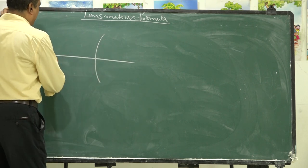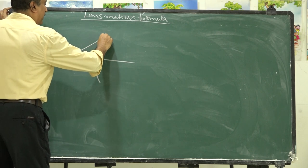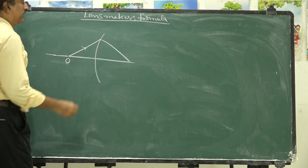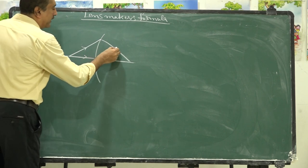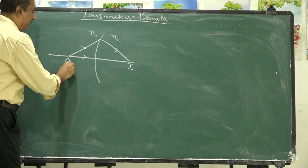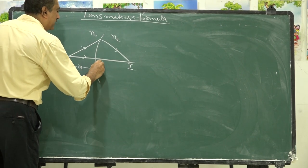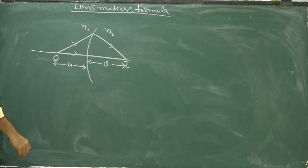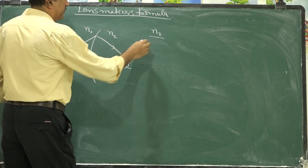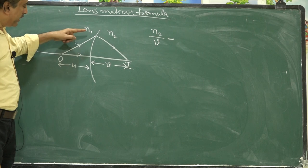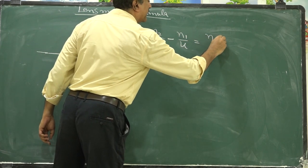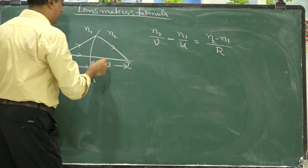Suppose light suffers refraction on a curved surface. A light ray comes from an object O and suffers refraction, forming an image at I in the second medium. If N2 is the refractive index of the second medium and N1 is that of the first medium, with object distance U and image distance V from the pole, then the condition for refraction is N2/V minus N1/U equals (N2 - N1)/R, where R is the radius of curvature.